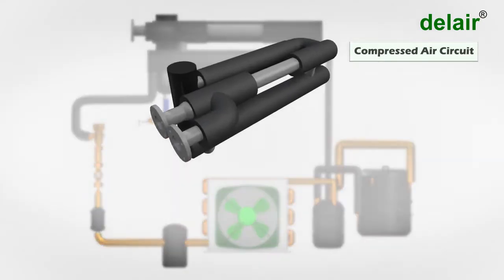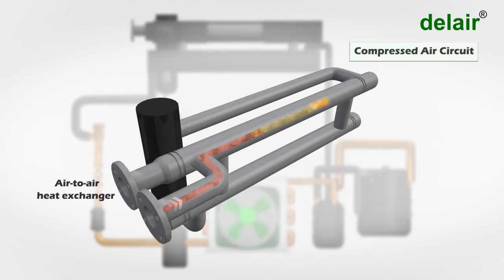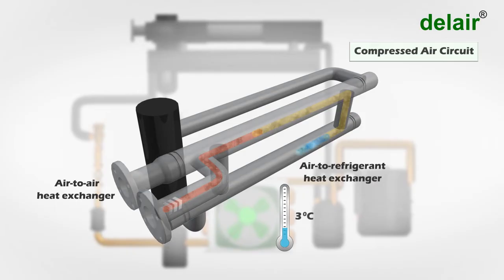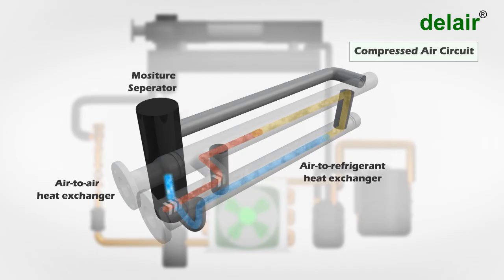In the compressed air circuit, the hot compressed air from an external air compressor enters into the air-to-air heat exchanger where its temperature is reduced by the outgoing cool dry air. The air then enters into the air-to-refrigerant heat exchanger where it is cooled to 3 degrees Celsius by the liquid refrigerant. This process causes the moisture to condense into liquid water. The cool air along with water droplets enters into the moisture separator where the water is separated from compressed air and drained through the auto drain valve.